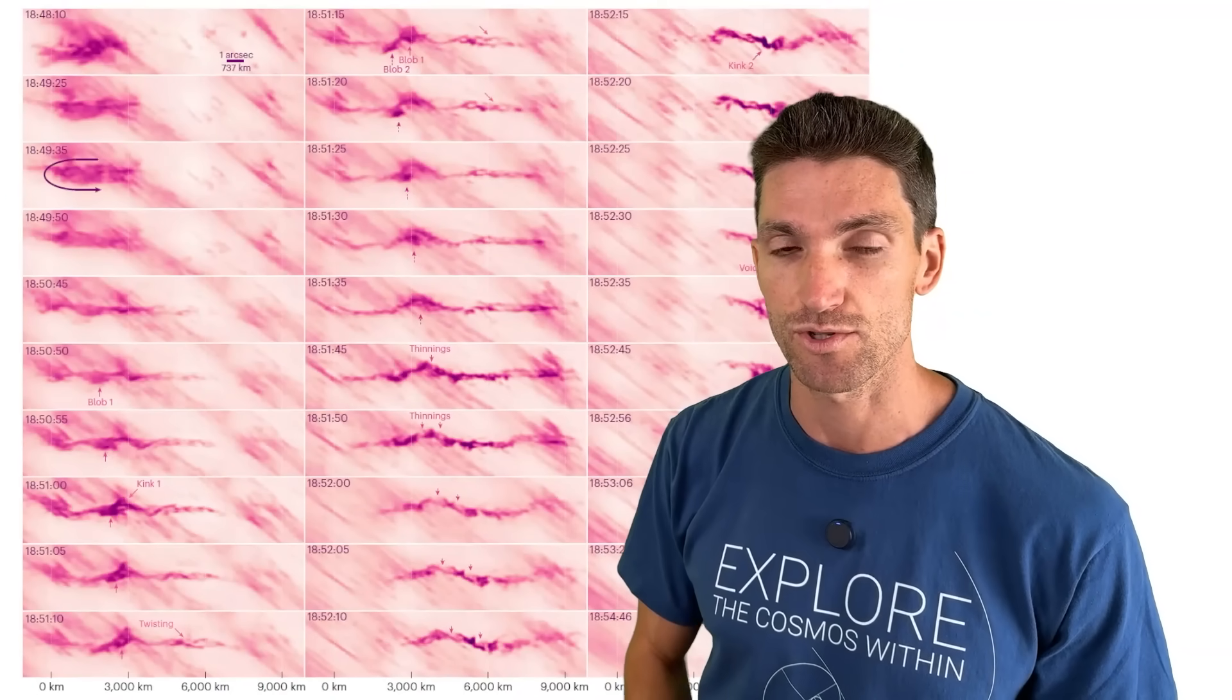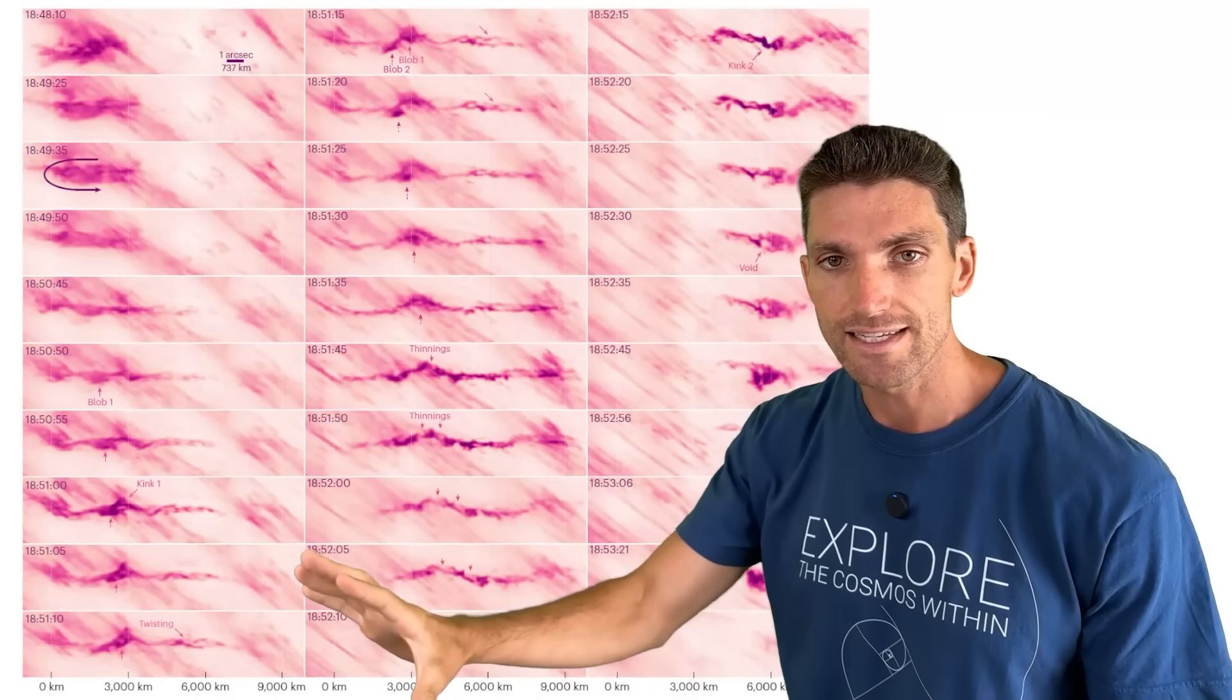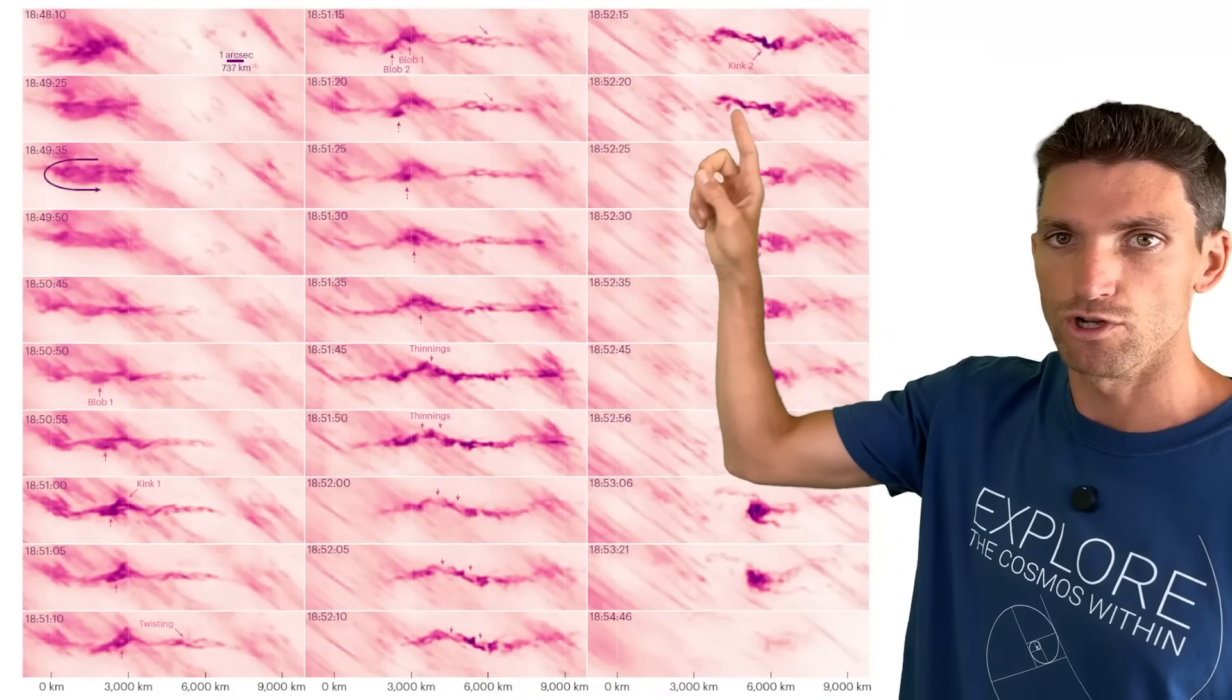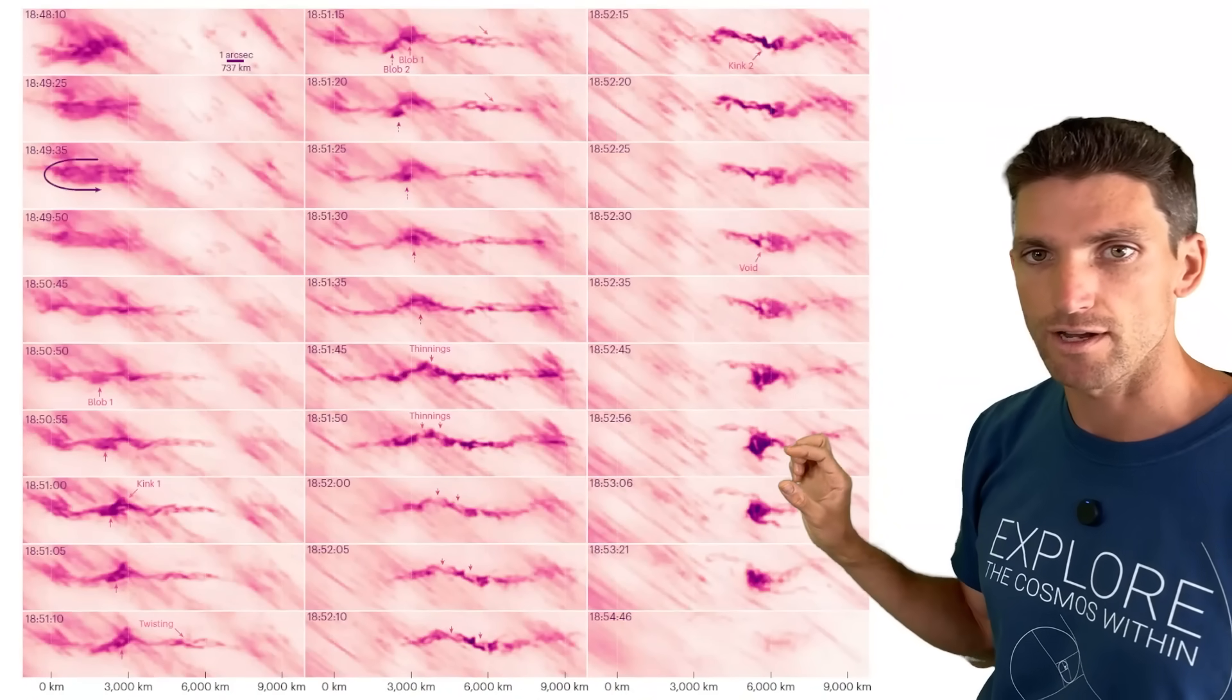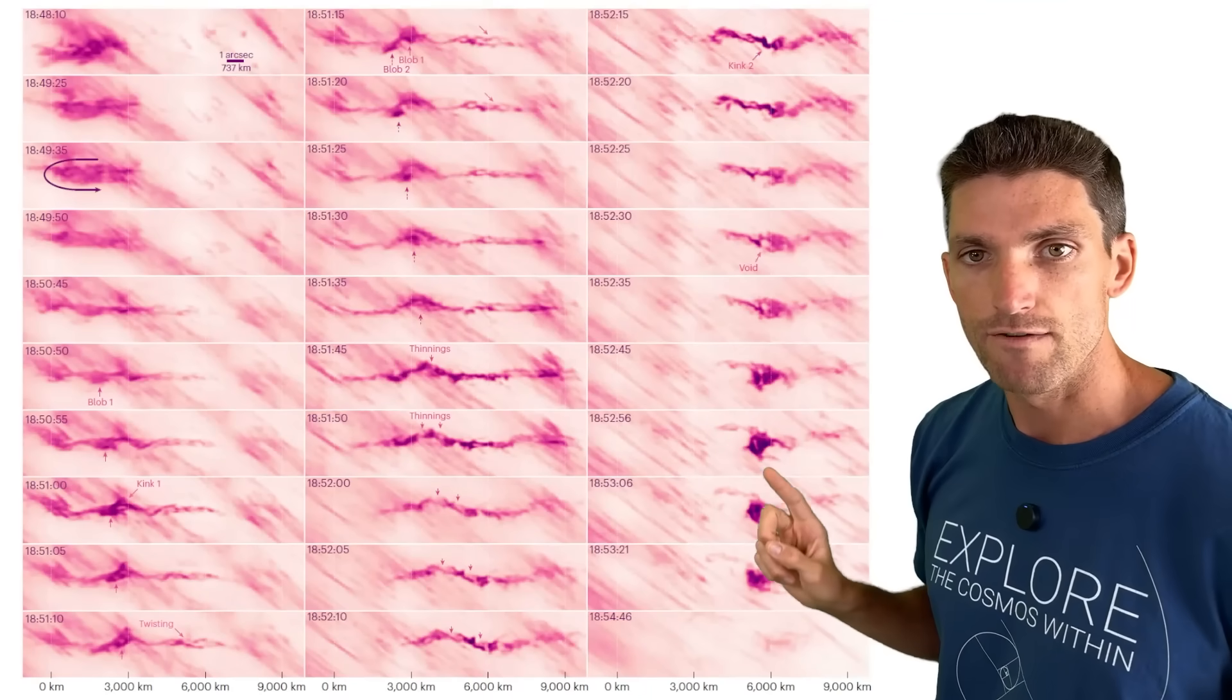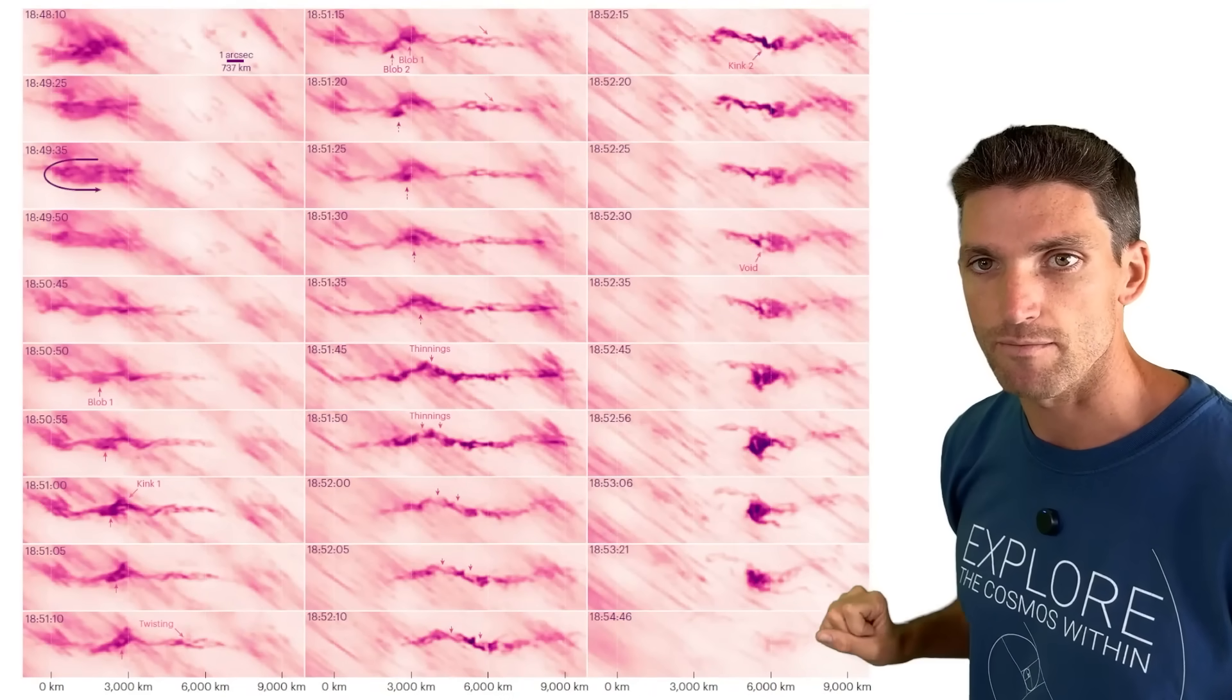Before then it continues to move through this coronal loop, re-bundling up here, getting quite a bit smaller. Maybe it's about 1,500 kilometers across there, then poof, it's gone.